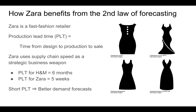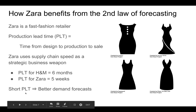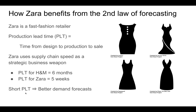Now let's look at the example of Zara, which uses this second law to its benefit. Zara is known as a fast fashion retailer — the time from design to production to sale in their stores is very short. Zara accomplishes this by investing in its supply chain and making smart, sometimes expensive, choices. The production lead time for competitors such as H&M can be as long as six months, whereas the production lead time for Zara is much shorter, around five weeks. Because Zara has a much shorter production lead time, it is able to make better demand forecasts about what customers want.